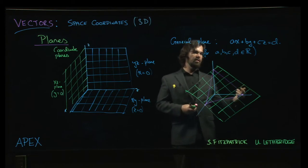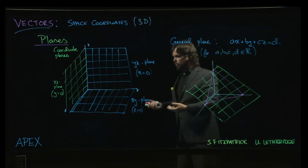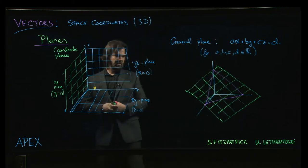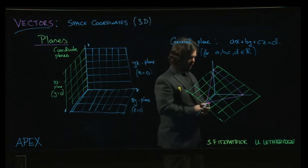And, of course, if one of these coefficients is missing, then you can't solve for that coordinate. And that's a case where you have a plane which is going to be, say, vertical or horizontal, right?